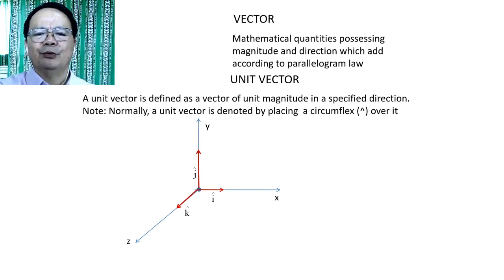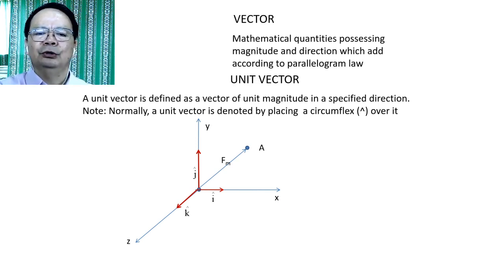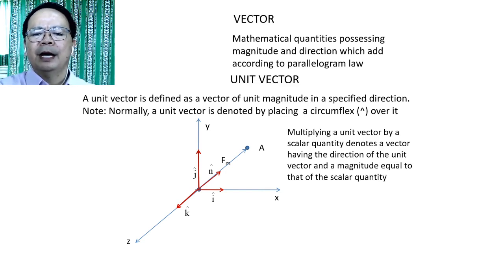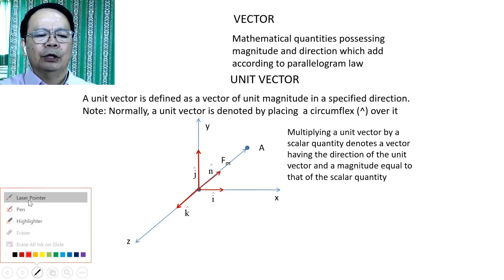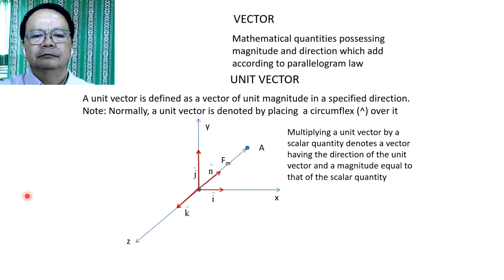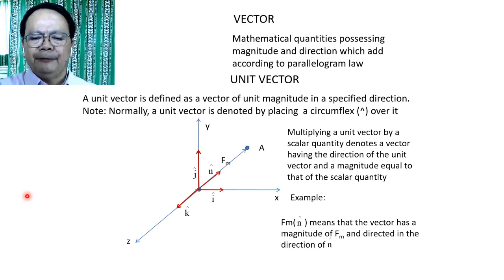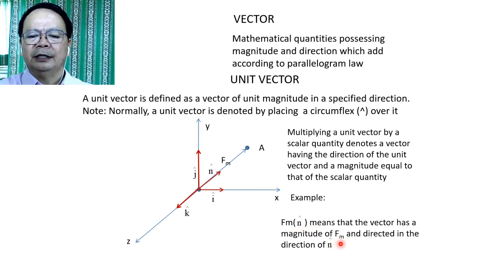And the direction of the positive z-axis is denoted by a unit vector k. Now, assuming that on this space we have a point A, and on this point there lies a vector having a magnitude F sub m. The direction of this force can be described by a unit vector n, so that if we multiply that unit vector by a scalar quantity, then that will denote a vector having the direction of the unit vector and magnitude equal to F sub m. If F sub m is multiplied by N, this means the vector has a magnitude of F sub m and is directed in the direction of N.